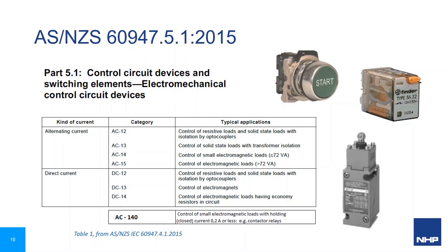The product standard for control circuit devices is IEC 60947 part 5, with utilisation categories and switching capabilities for push buttons, control relays, limit and position switches defined in part 5.1. IEC 140 is an additional utilisation category with low current values for proximity switches from part 5.2. Solid state relays themselves are defined in IEC 62314.